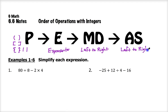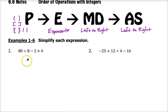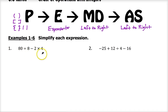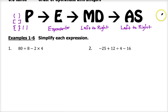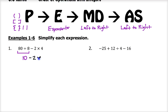So let's practice now with a few examples. Number one: you have 80 divided by 8 minus 2 times 4. There are no grouping symbols and there are no exponents, so we jump right to step three and do any multiplication or division from left to right. The first thing I see is division — 80 divided by 8 is 10. So I'm going to simplify that to 10, and then everything else comes down: minus 2, then times 4.